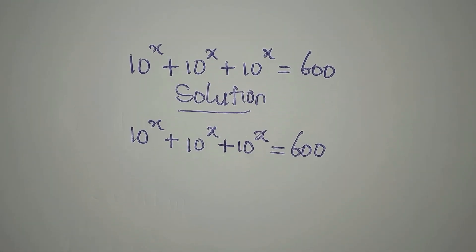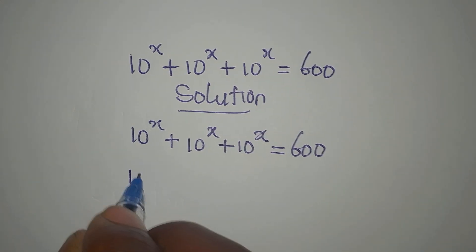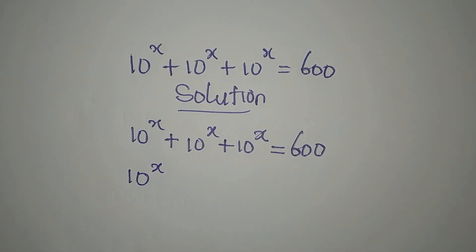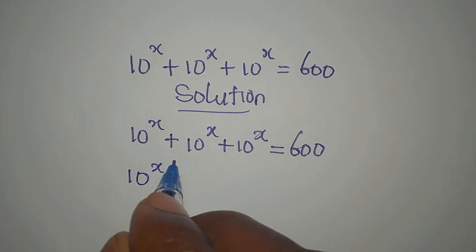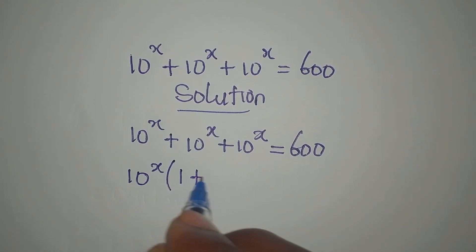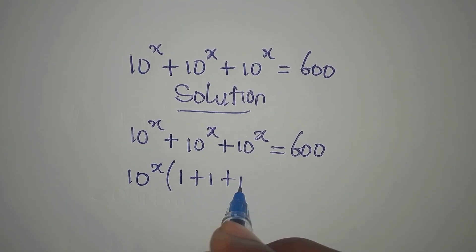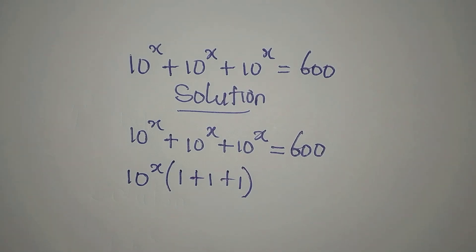The first step is to add the left hand side, and we can do that by factorization, because 10 to the power of x is common. Then here we'll have 1 plus 1 plus 1. If you open this bracket it will give you this back.